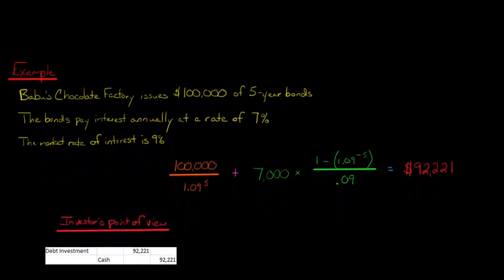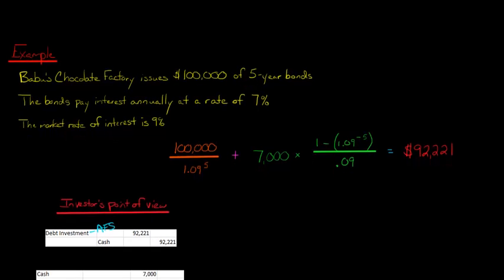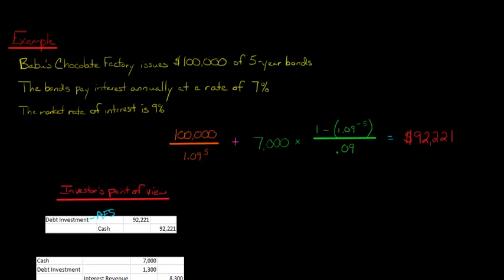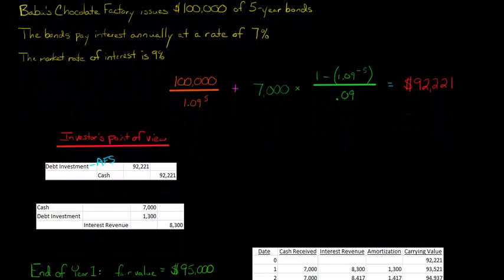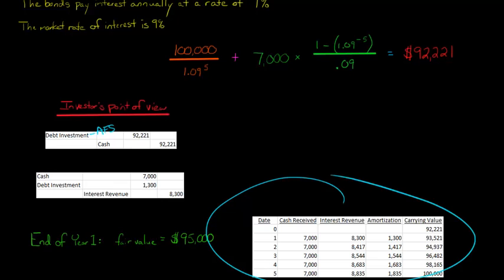From the investor's point of view, they're going to debit debt investment, probably call it debt investment AFS, available-for-sale debt investment, for $92,221. They're going to credit cash for $92,221. And I've got a little effective interest table that I put together here.